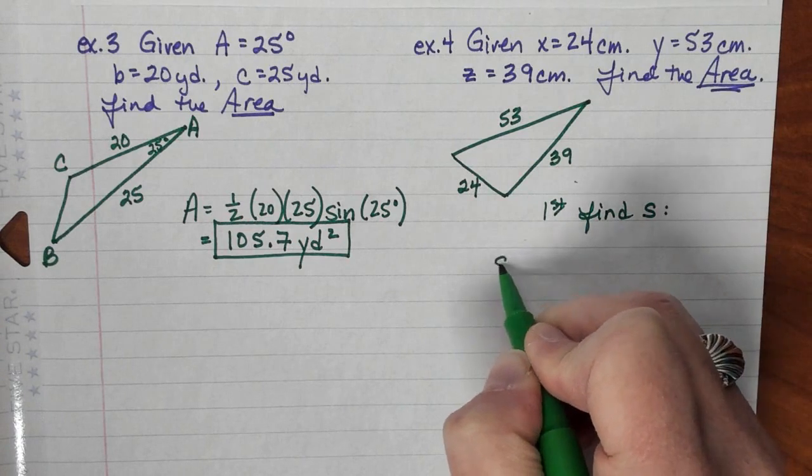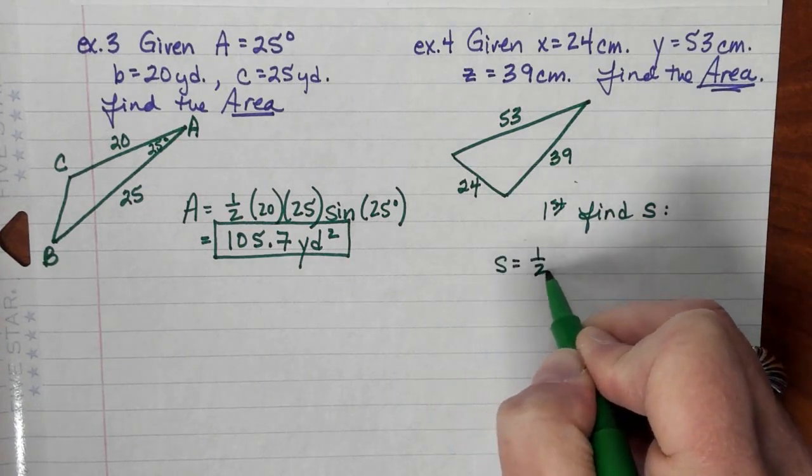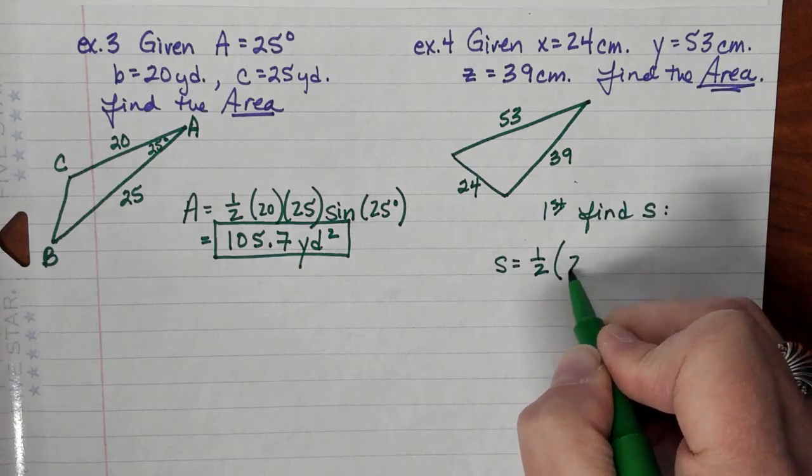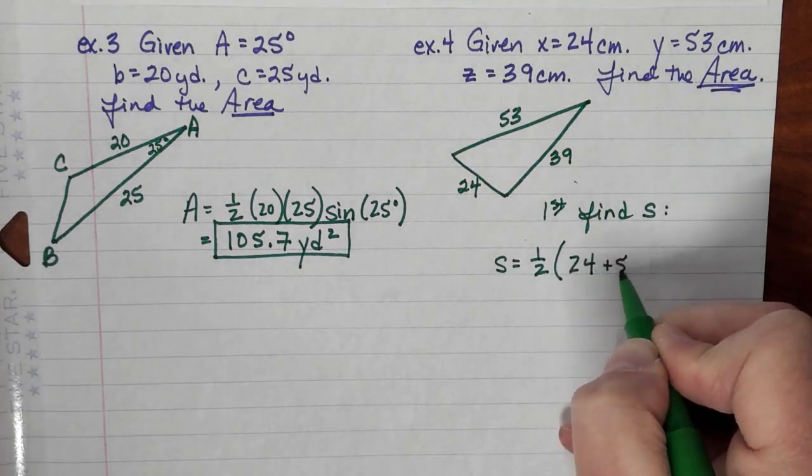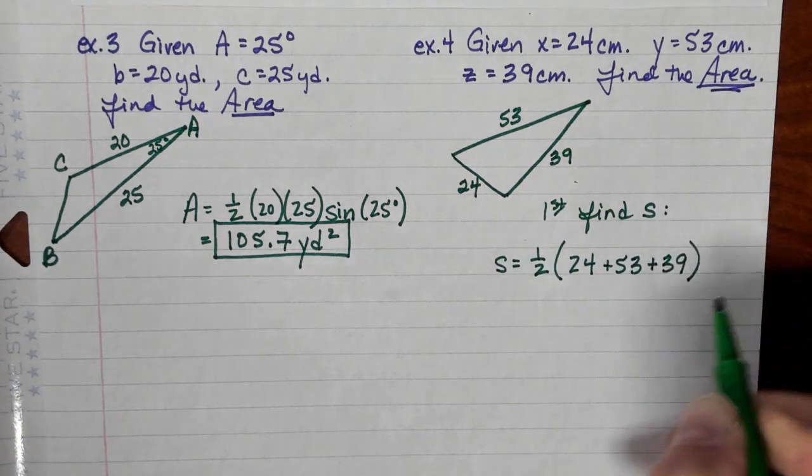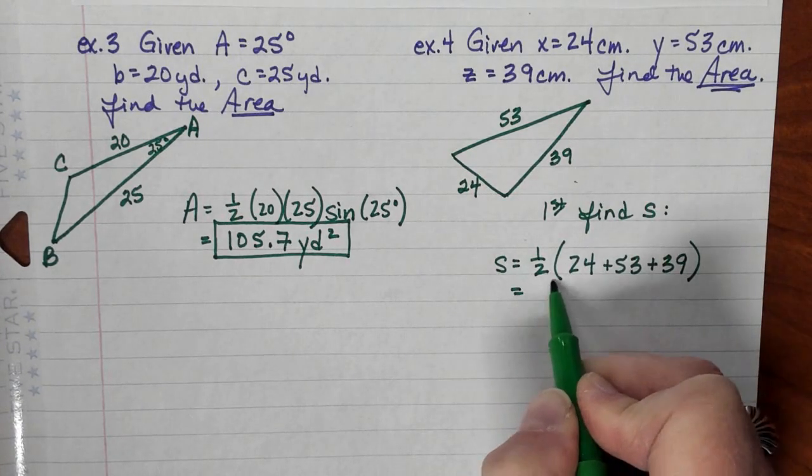S equals one half the sum of the sides. So I've got 24 plus 53 plus 39, and that gives me 58.